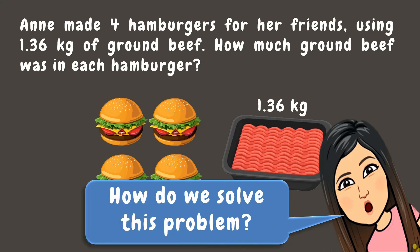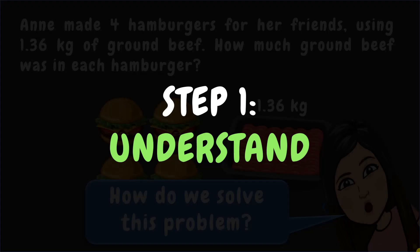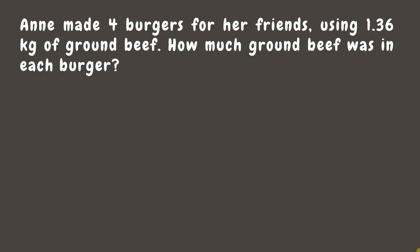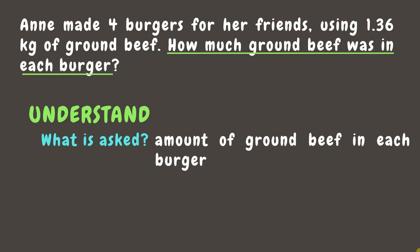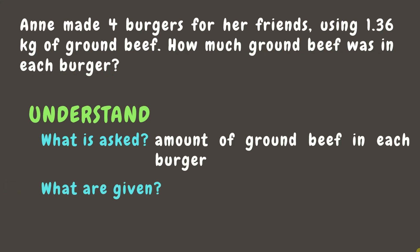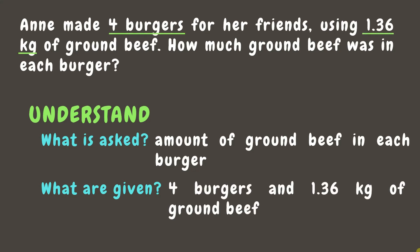To solve this problem, we will use the four-step method. Step 1: Understand. There are two questions you need to ask yourself. First, figure out what is being asked in the problem. In this case, we want to know the amount of ground beef in each burger. Next, identify the given data: four burgers and 1.36kg of ground beef.